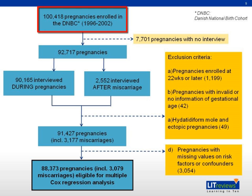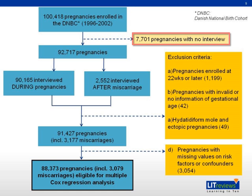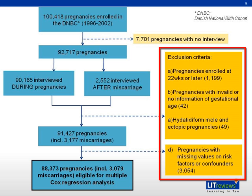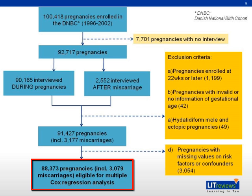A total of 100,418 pregnancies were enrolled in the Danish National Birth Cohort from 1996 to 2002. 7,701 pregnancies were excluded as they had no interview done. After removing pregnancies fulfilling the exclusion criteria and those with missing values on risk factors or confounders, a remaining 88,373 pregnancies were eligible for the multiple Cox regression analysis, including 3,079 miscarriages.